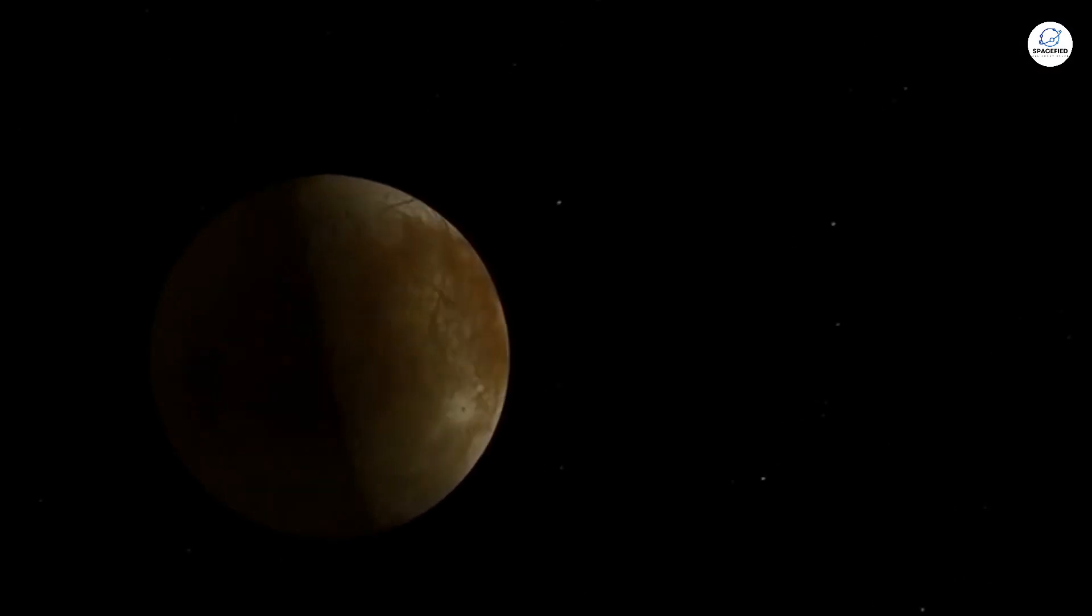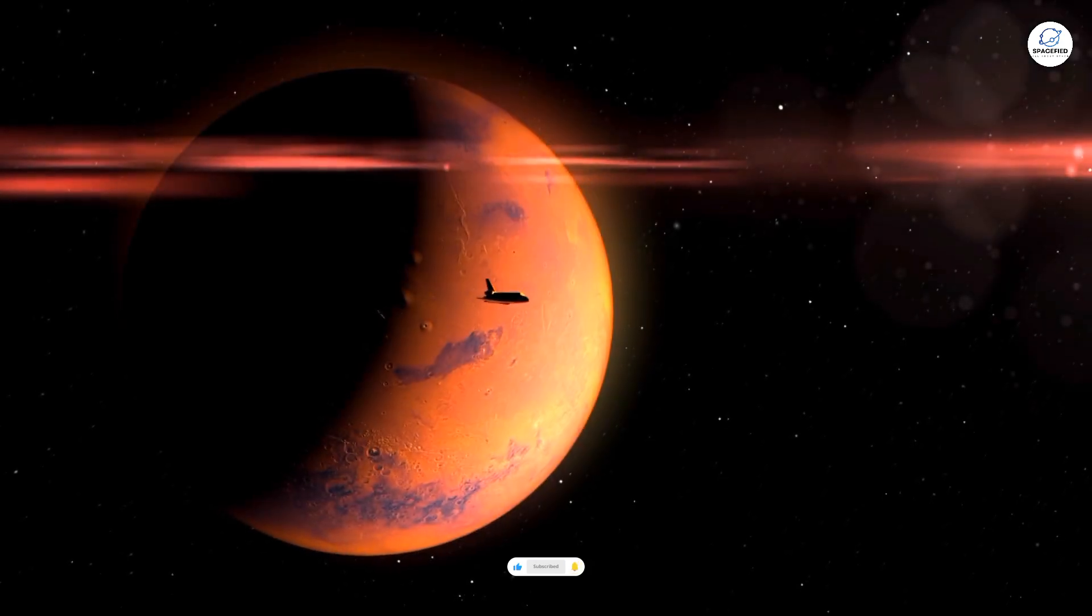But the truth is, we just don't know. Speaking of bizarre planets, let's talk about TOI-3757b, a world that's been compared to a marshmallow. Discovered in 2022, this gas giant has a density so low that it's unlike anything we've ever seen.